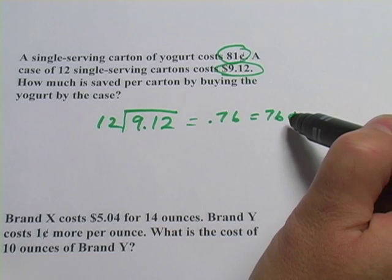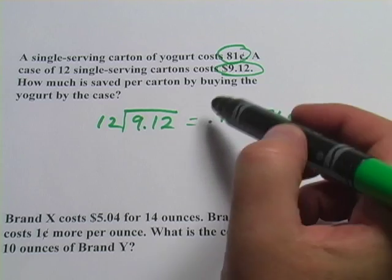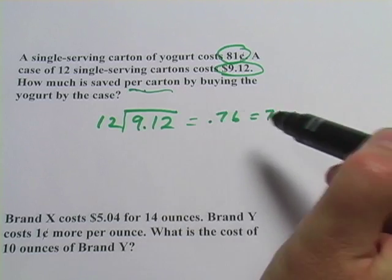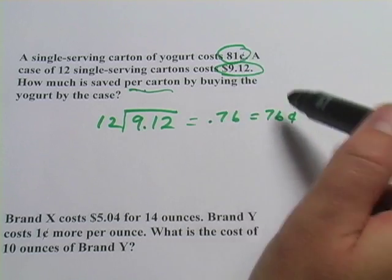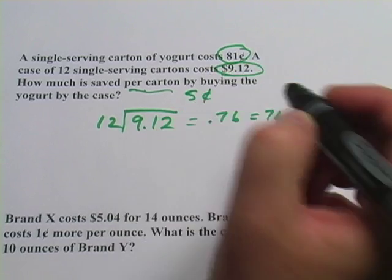So you're saving quite a bit, it looks like 5 cents on every carton of yogurt. So how much is saved per carton? Okay, that's what they were asking. So it's the difference between the 81 and the 76. So the answer there would be 5 cents per carton.